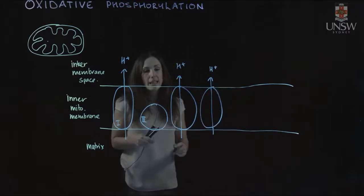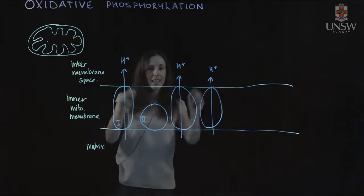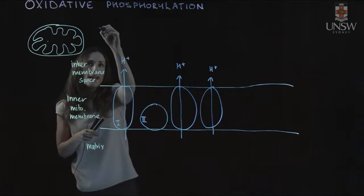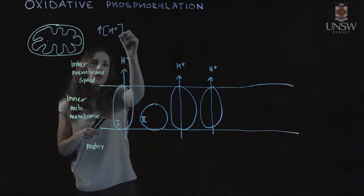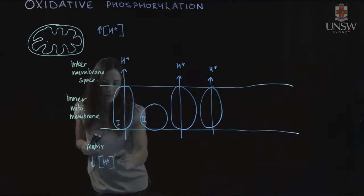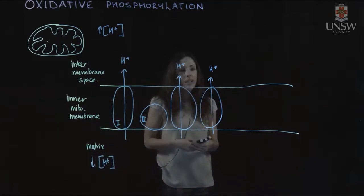We have a lot of protons moving from the matrix into the intermembrane space. This means the intermembrane space has a higher concentration of protons compared to the matrix, which has a lower concentration. This is really important for this process and ATP generation.